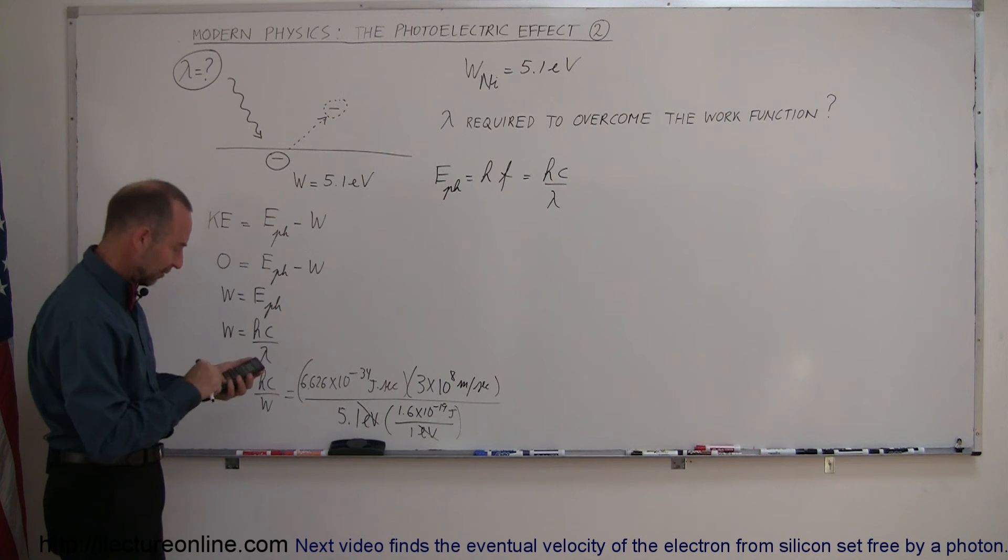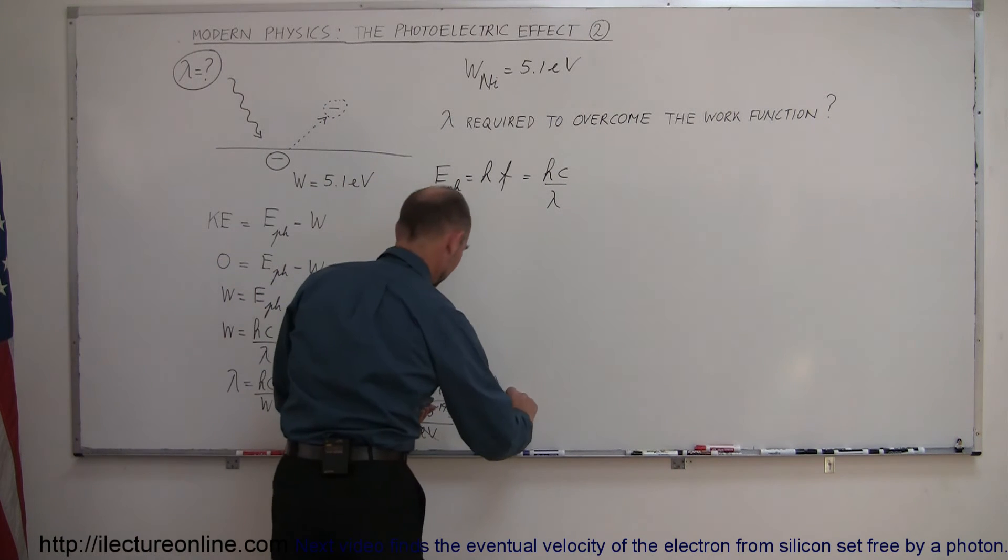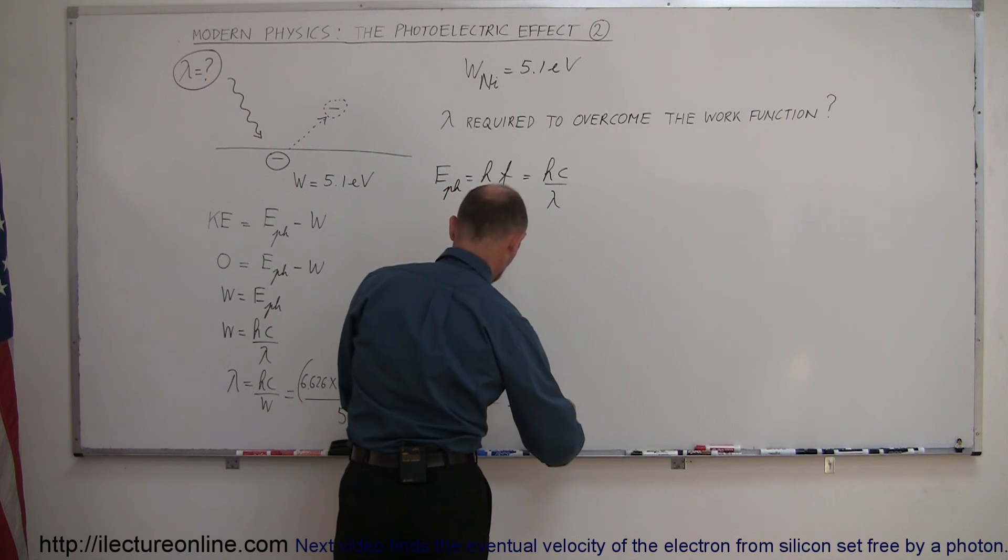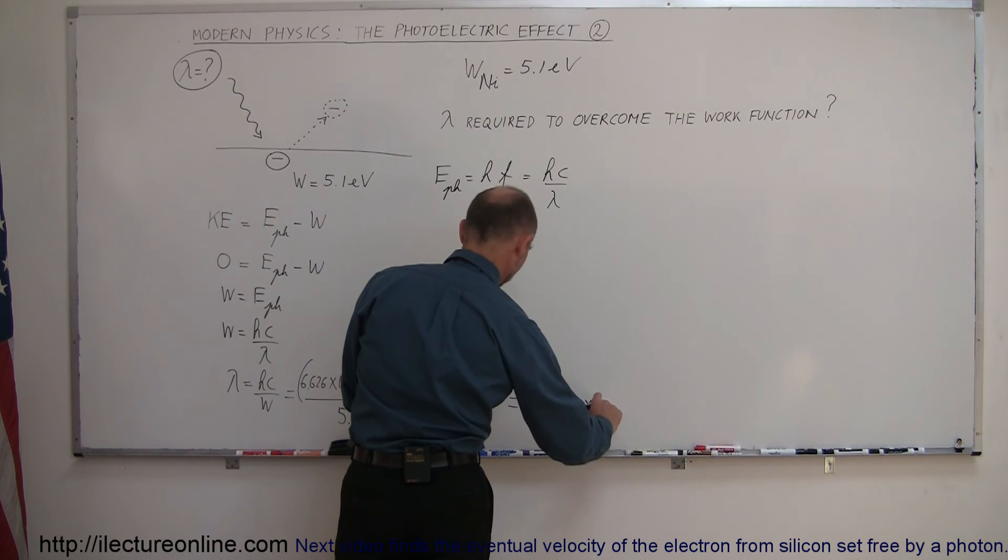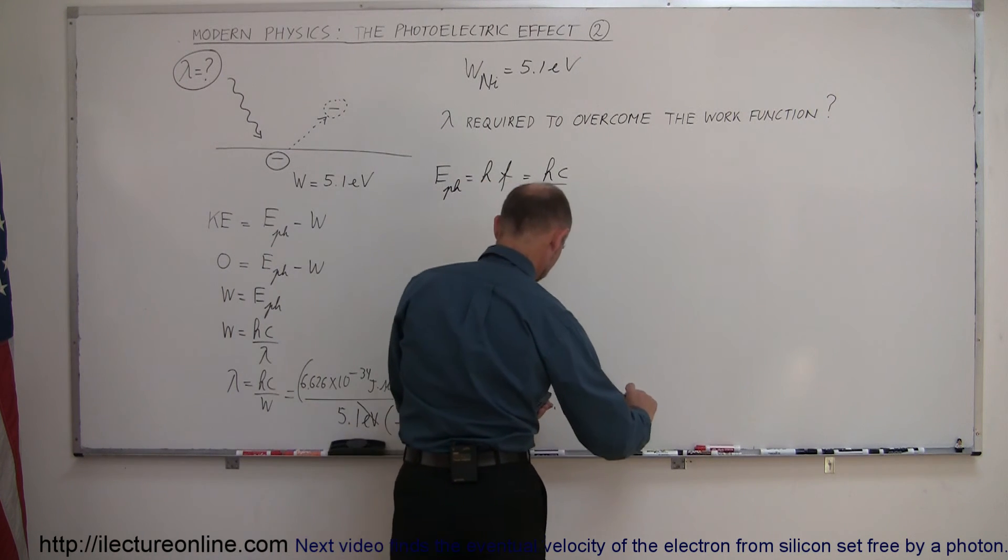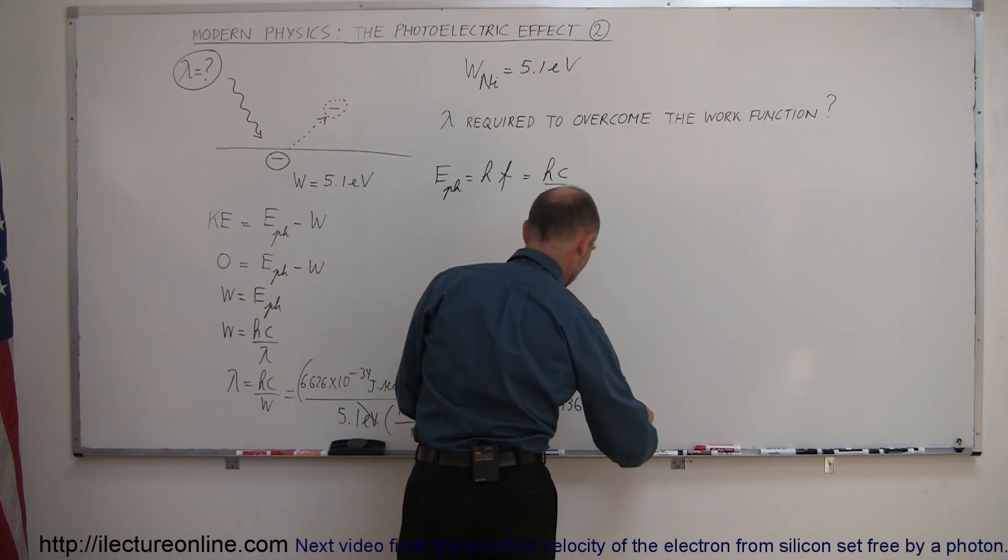6.626 e to the 34 minus times 3 e to the 8, divided by 5.1, and then divided by 1.6 e to the 19 minus, and what do we get? We get this should be equal to 2.436 times 10 to the minus 7, and that would be meters.